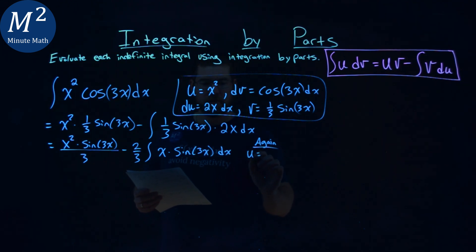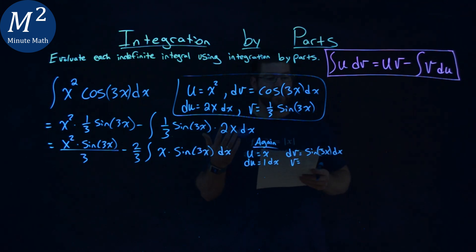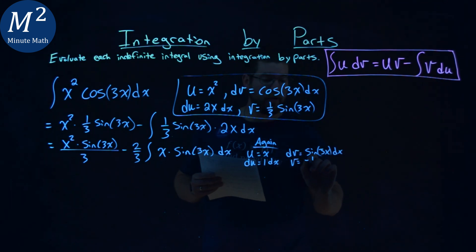Let's set our u value here to be x, and that makes our du equal to 1 dx. Our dv value is sine of 3x dx, and that makes our v value the integral of sine of 3x, which is negative 1 third cosine of 3x.